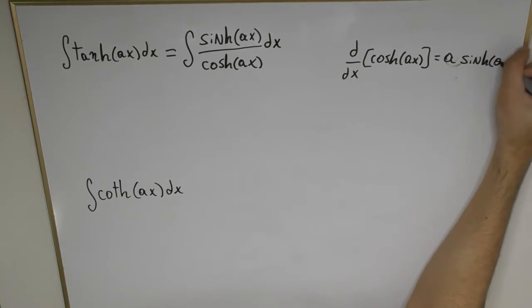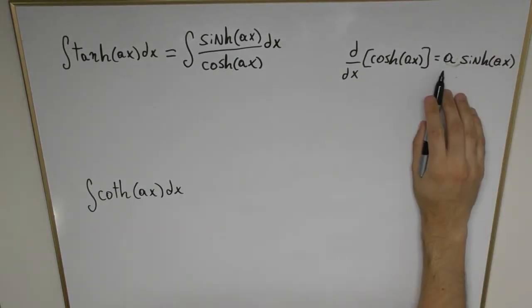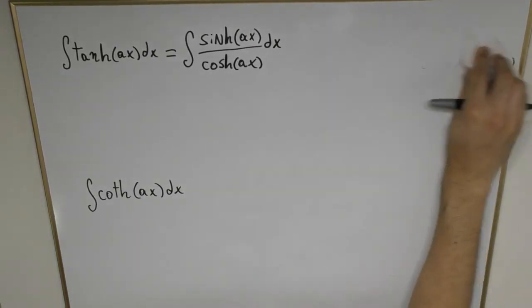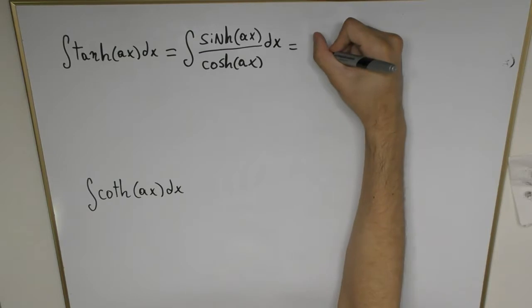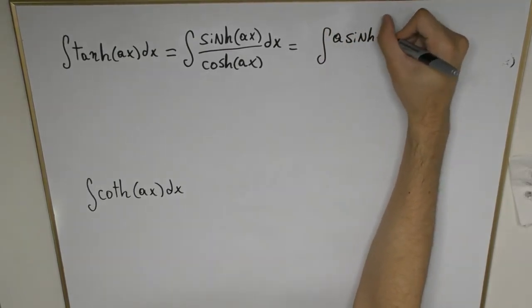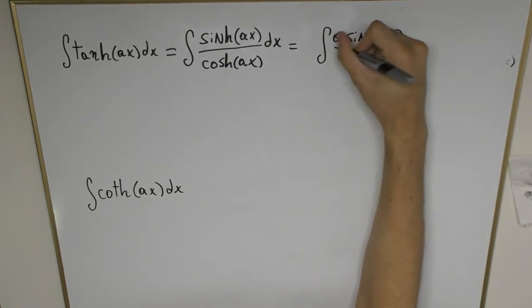The only thing missing here is that a factor. To fix that what we're going to do is we're going to place an a at the front, so right at the top of the function, a sinh(ax) divided by cosh(ax) dx.